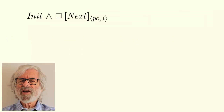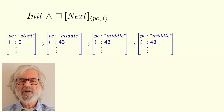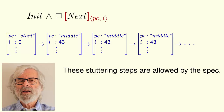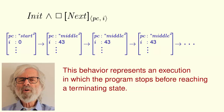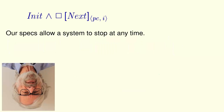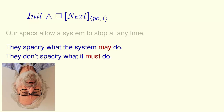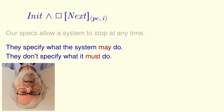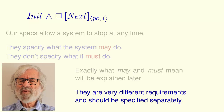This specification is also satisfied by a behavior that starts in a state satisfying Init, takes a step satisfying action Next, takes a stuttering step, takes another stuttering step, and keeps on taking stuttering steps forever. This behavior represents an execution in which the program stops before reaching a terminating state. All the specs we have written so far allow the system being specified to stop at any time by taking infinitely many stuttering steps. Our specs specify what the system may do — they don't specify what it must do. They allow it to do nothing. Exactly what may and must mean will be explained later, but they are very different kinds of requirements and they should be specified separately.